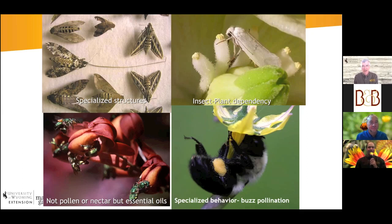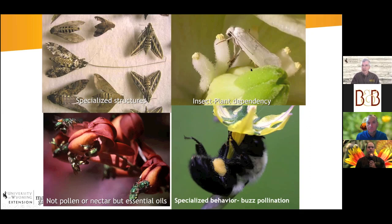Some specialization involves specialized structures, like the proboscis — or tongue — on this specimen, which has been unfurled so it can hover in front of a long tubular flower and feed on nectar, getting pollen on that proboscis in the process. Then there's the yucca moth, which is the only effective pollinator of yucca plants. Other insects may visit yucca flowers, but they don't pollinate them — the long-term relationship between this moth and yucca is what they depend on for each other.